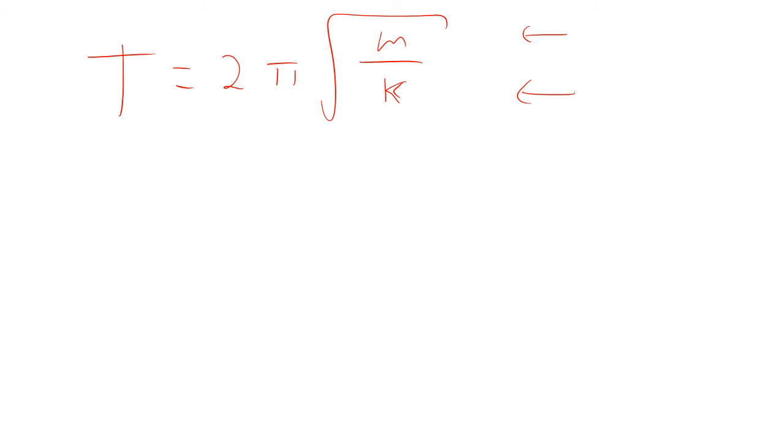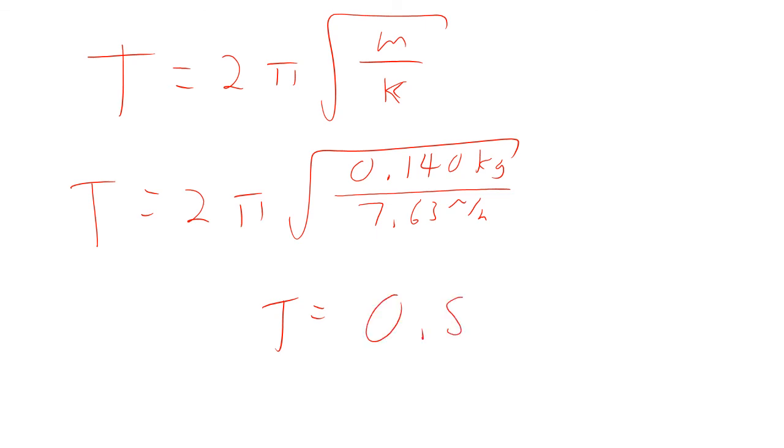So a less stiff spring would have a longer period. Okay. So in this case, this is 2 pi square root. Now, what is M? M is how much is oscillating. So that's 140 grams. That's 0.14 kilograms. It's not how much fell off. It's how much is still oscillating. Okay. Divided by 7.63 newtons per meter. So the period comes out to be 0.851 seconds.